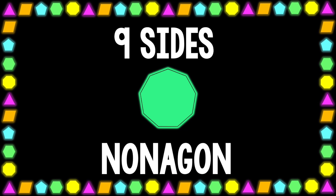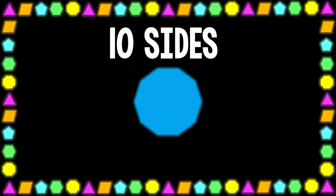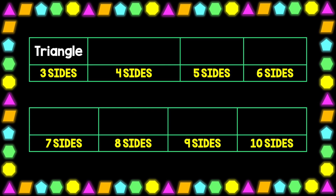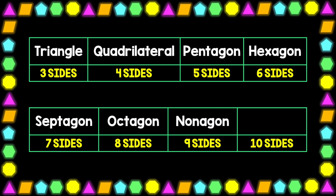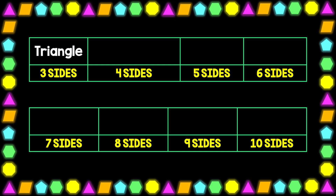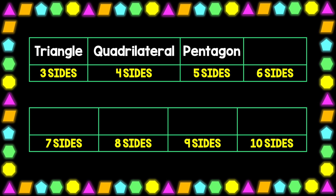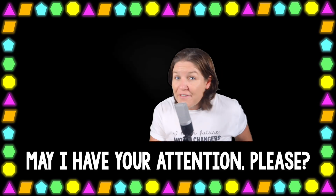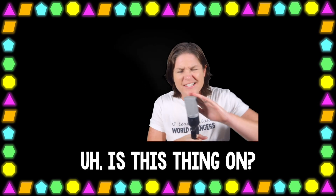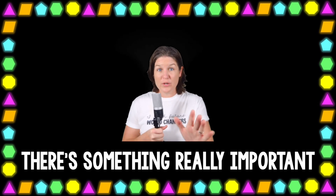Nine sides: nonagon. Ten sides: decagon. Triangle, quadrilateral, pentagon, hexagon, septagon, octagon, nonagon, and decagon. May I have your attention please — is this thing on? Listen everybody, there's something really important about polygons that you need to know.